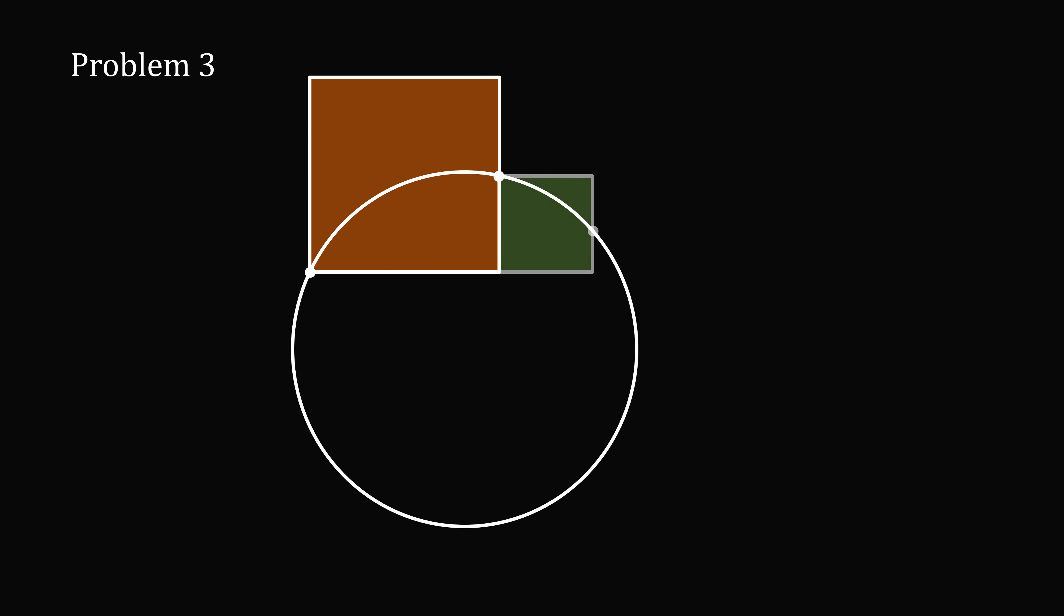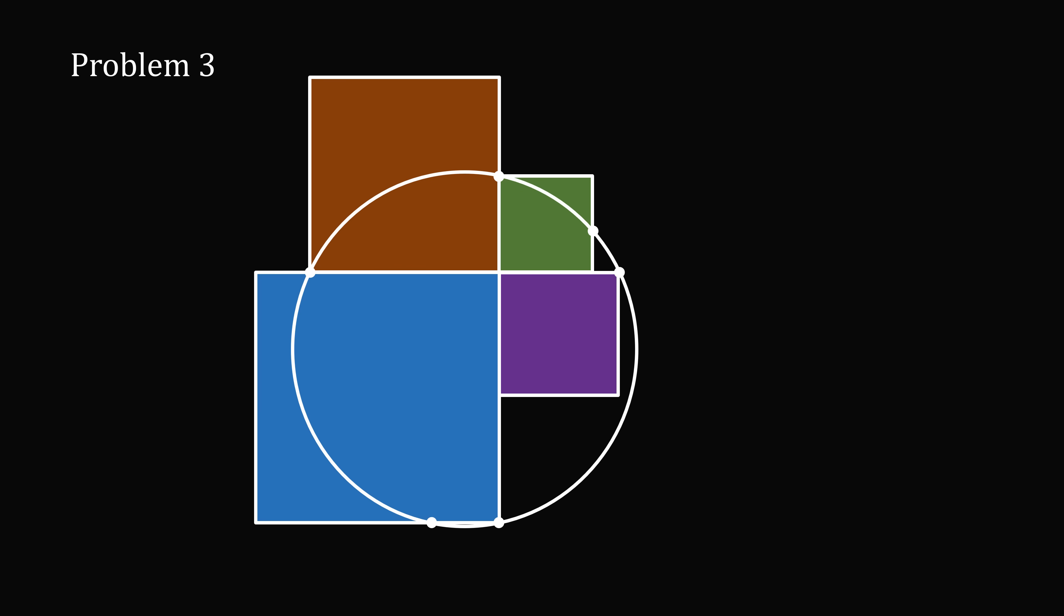Problem 3. This is from Twitter, at cshare41. Here's a circle, and here are four squares. Three of the areas are known as 16, 25, and 100. What is the area of the circle?